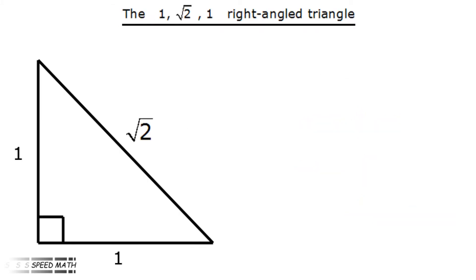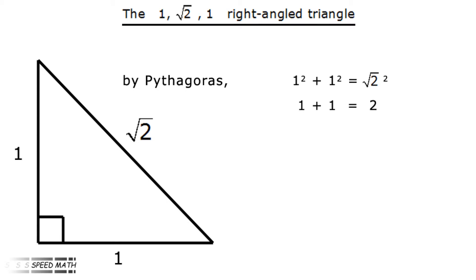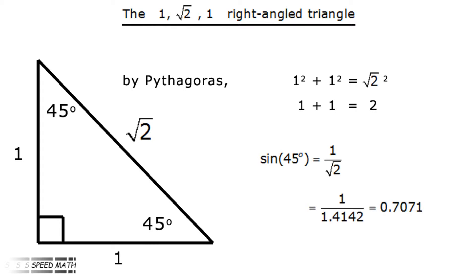Let's now look at the 45 degree angle. There are two of them, and they reside in a special right angle triangle this time of sides 1, 1, and root 2. You can see by using Pythagoras how the numbers work: 1 squared plus 1 squared equals root 2 squared — in other words 1 plus 1 equals 2. Sine 45 degrees equals 1 divided by root 2, which gives 1 over 1.4142, equalling 0.7071. So remember these two triangles with sides 1, 2, root 3 and 1, 1, root 2 — they are really useful.